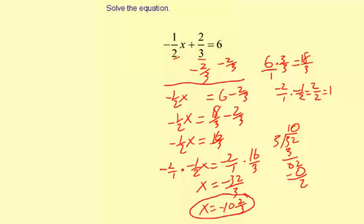Now there's another way to solve this. You can multiply the whole equation through by the least common multiple of 2 and 3. And that would be 6, because 2 times 3 equals 6. So let me show you what that looks like.